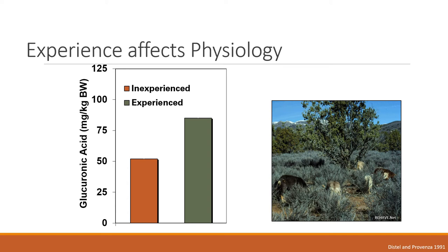In the all-you-can-eat black brush trial, blood samples were taken and glucuronic acid was measured. The experienced animals had higher levels of glucuronic acid, indicating better liver activity — they were processing black brush better than the inexperienced animals. Again, this shows that when an animal eats food early in life it changes their body, which changes their experience with the food.